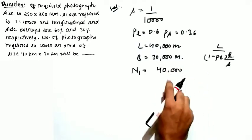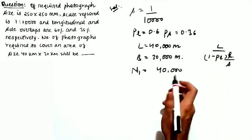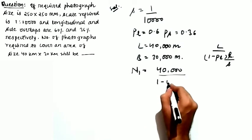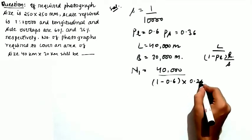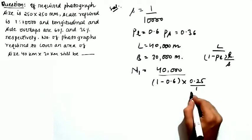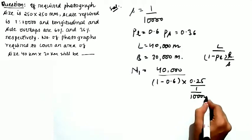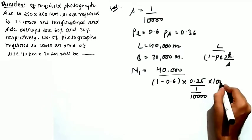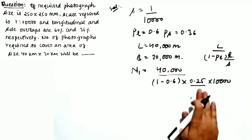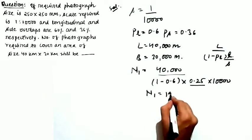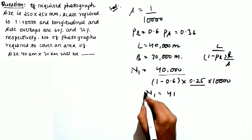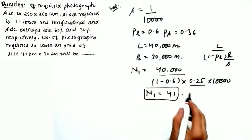So the ground length L is 40,000m, (1 - PL) is 0.6, the photograph length is 250mm (0.25m), and S is 1/10,000. Solving this formula, N1 comes out to be 41 — that is the number of photographs required in the length direction.